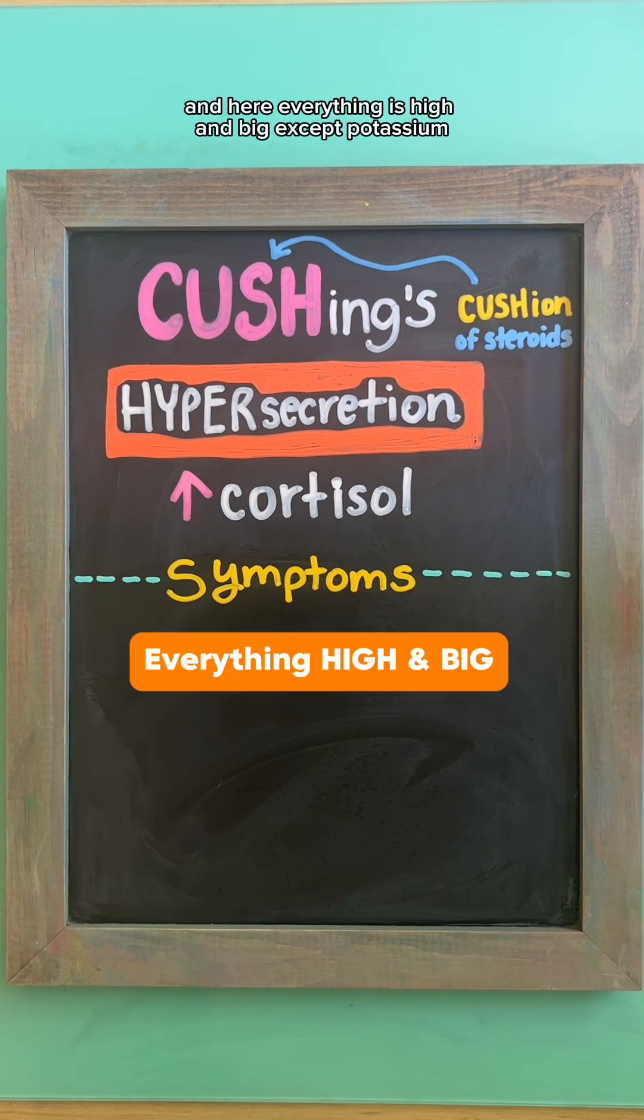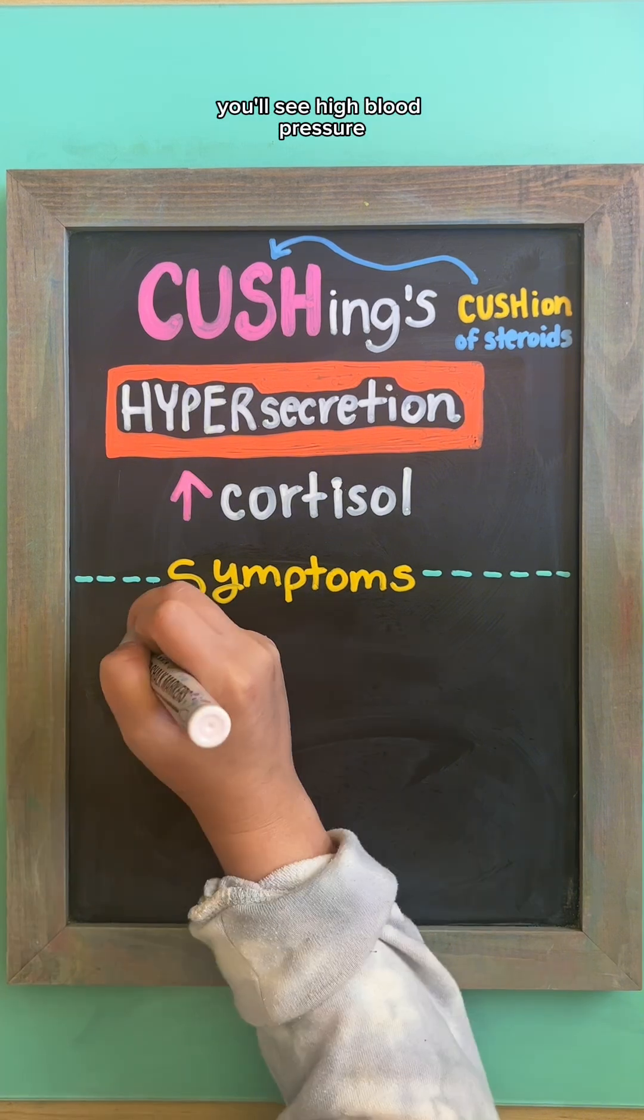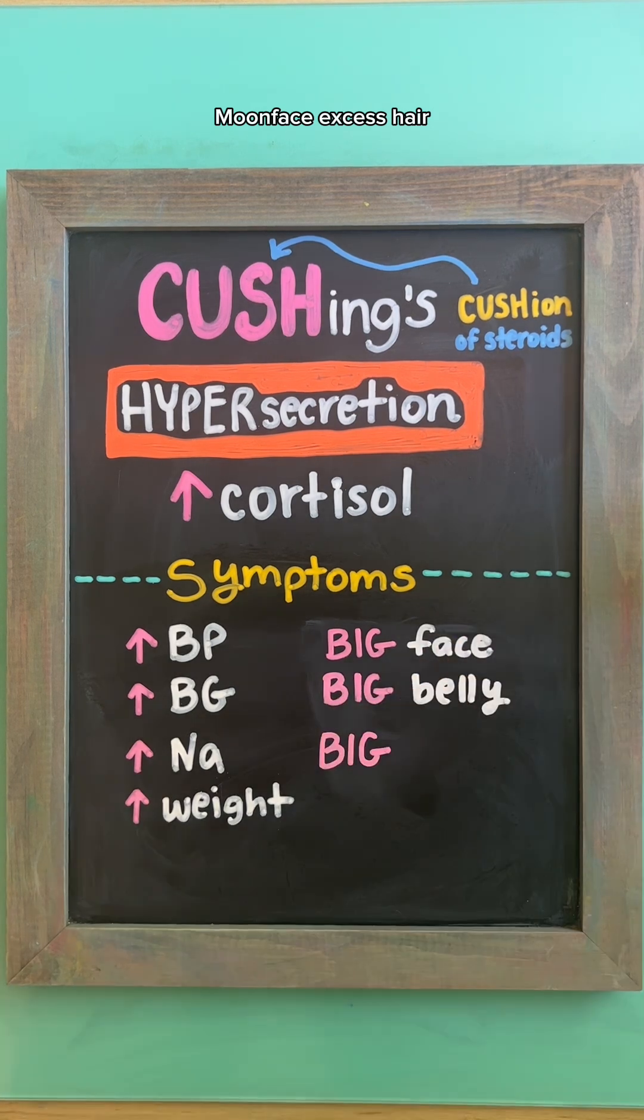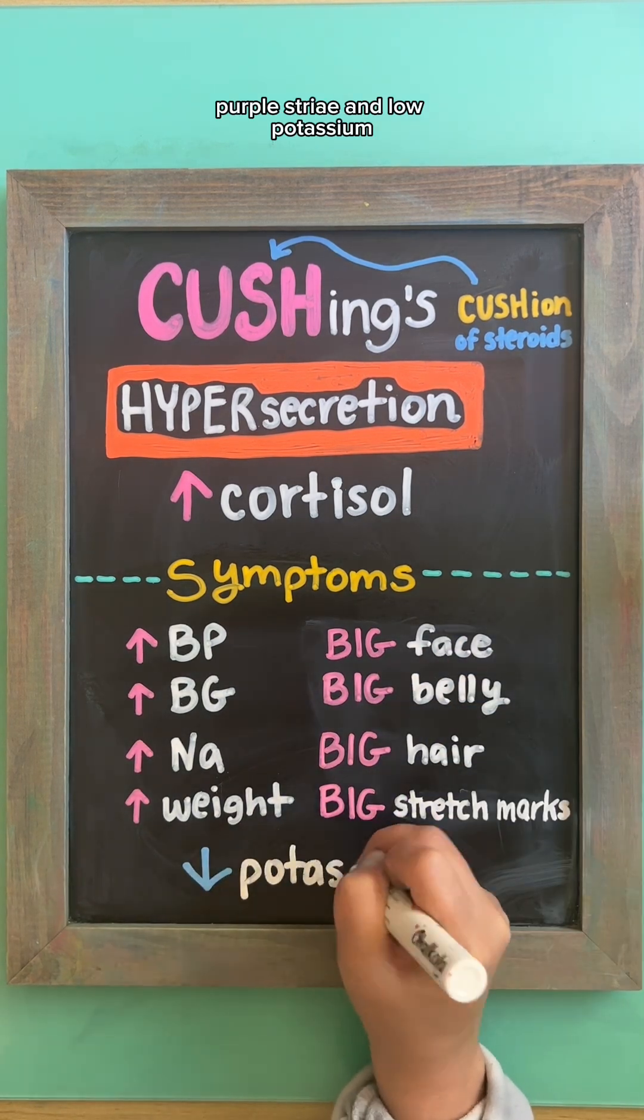And here, everything is high and big except potassium. You'll see high blood pressure, blood sugar and sodium, weight gain, moon face, excess hair, purple striae, and low potassium.